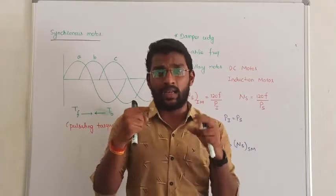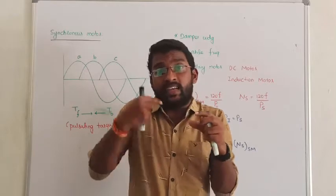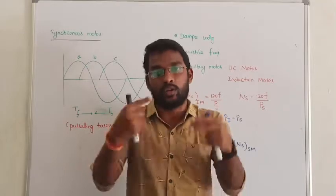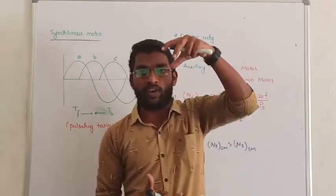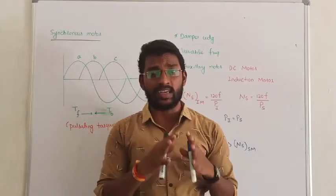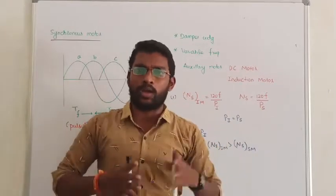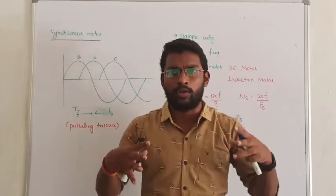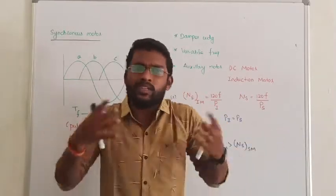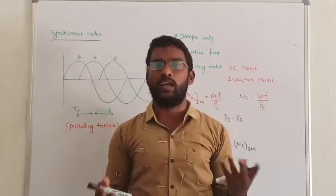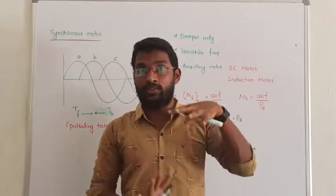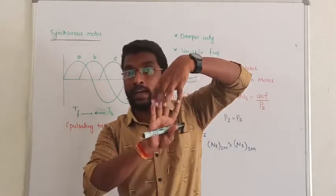The rotor DC excitation produces flux at synchronous speed. The rotor will run at synchronous speed, producing flux. Stator flux and rotor flux operate at synchronous speed — this is called magnetic locking. This is an alternator operation. But in the motor, there is no prime mover. The load is also connected, so there is no prime mover. The rotor and stator flux are connected via magnetic locking.